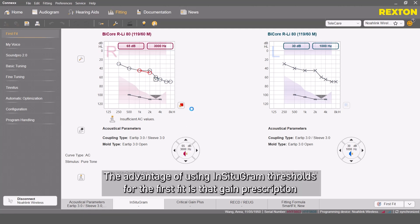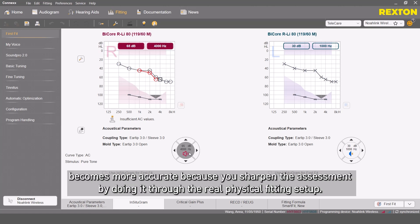The advantage of using Incitogram thresholds for the first fit is that gain prescription becomes more accurate because you sharpen the assessment by doing it through the real, physical fitting setup.